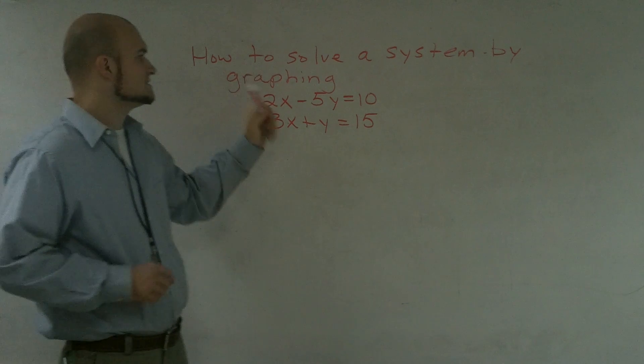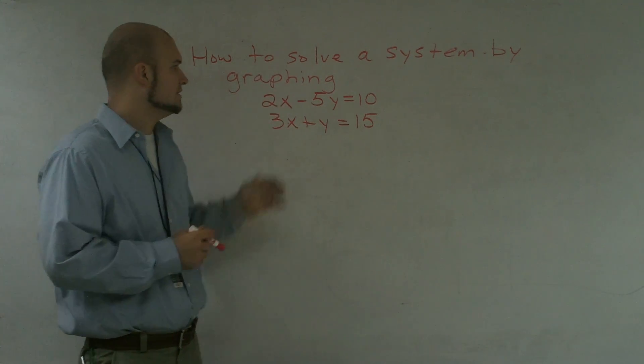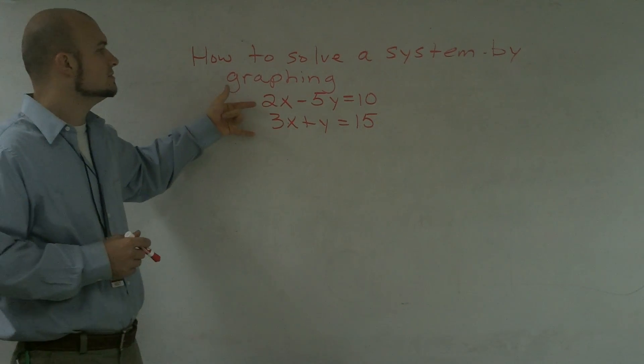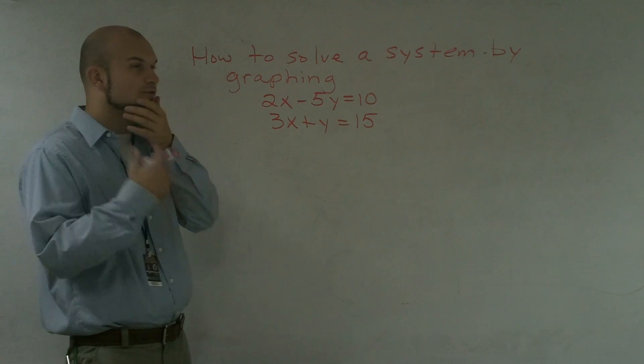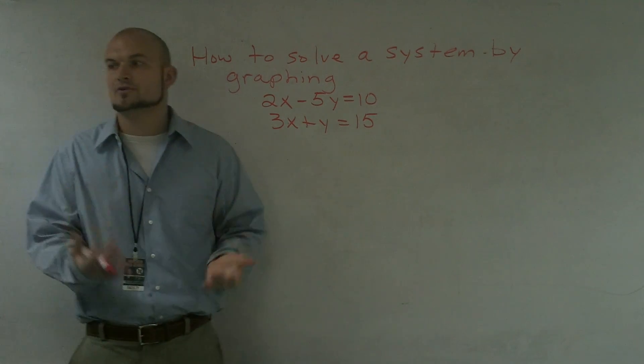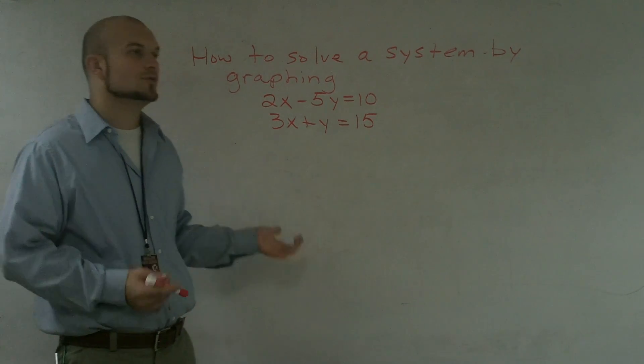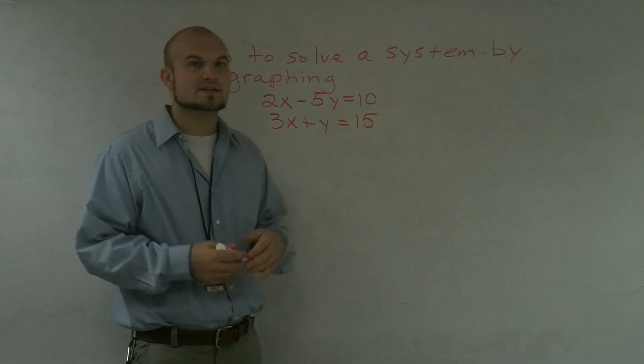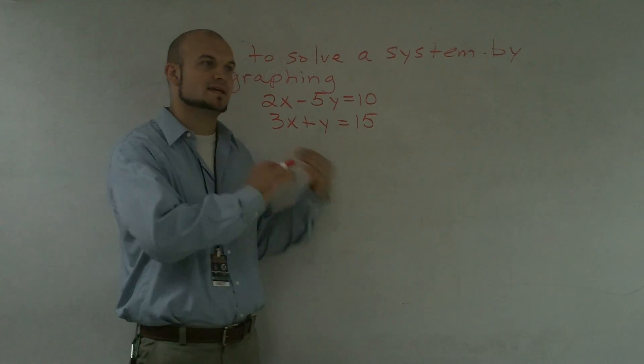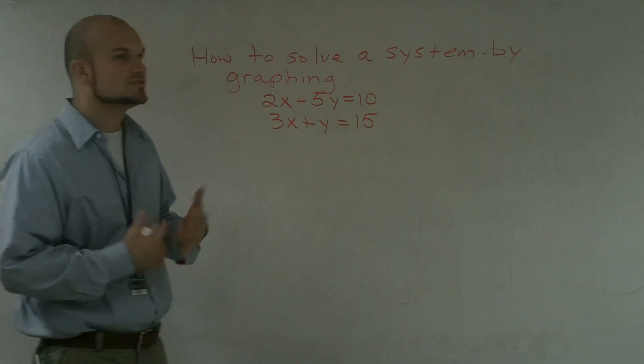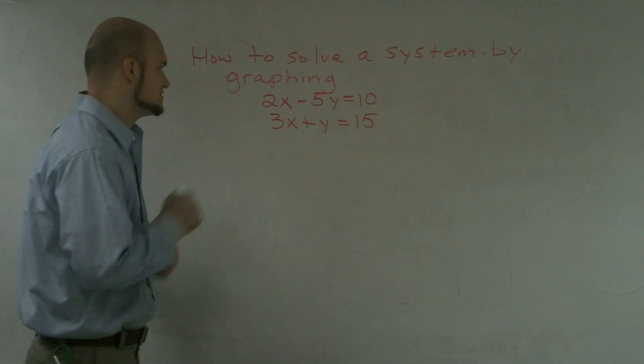Alright, what I'd like to do is show you guys how to solve a system by graphing. And if I'm looking at these two equations, there's two ways that we've shown how to graph an equation. One is by graphing the slope-intercept form, and the other way is finding both the y and the x-intercepts and then connecting them to find the graph. So I'm going to use both ways to graph these equations.